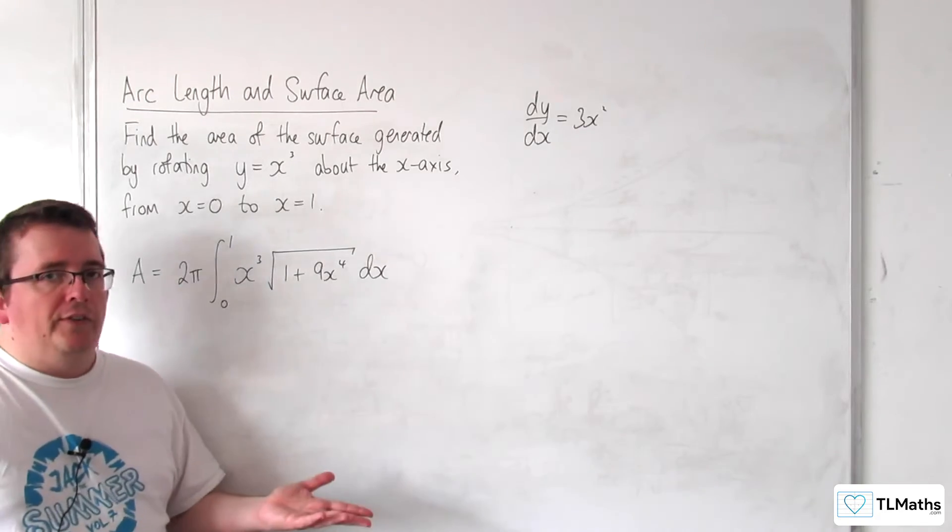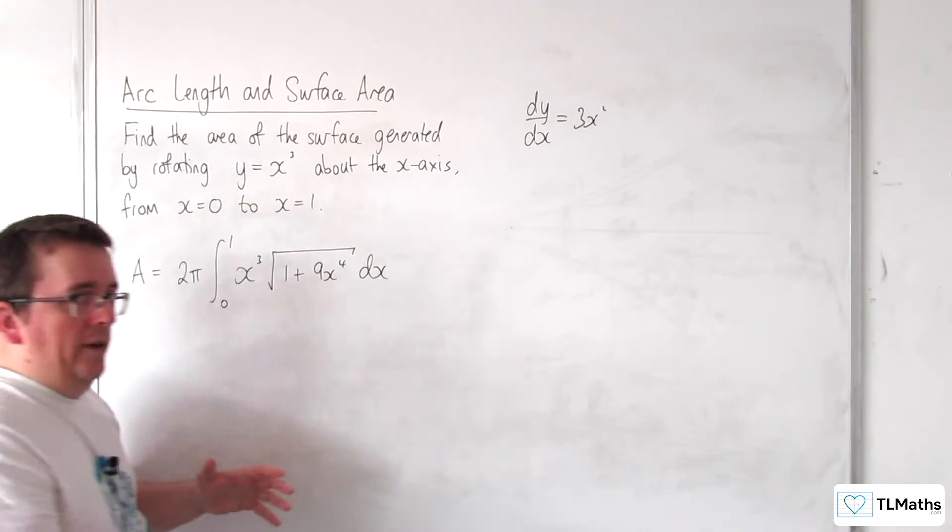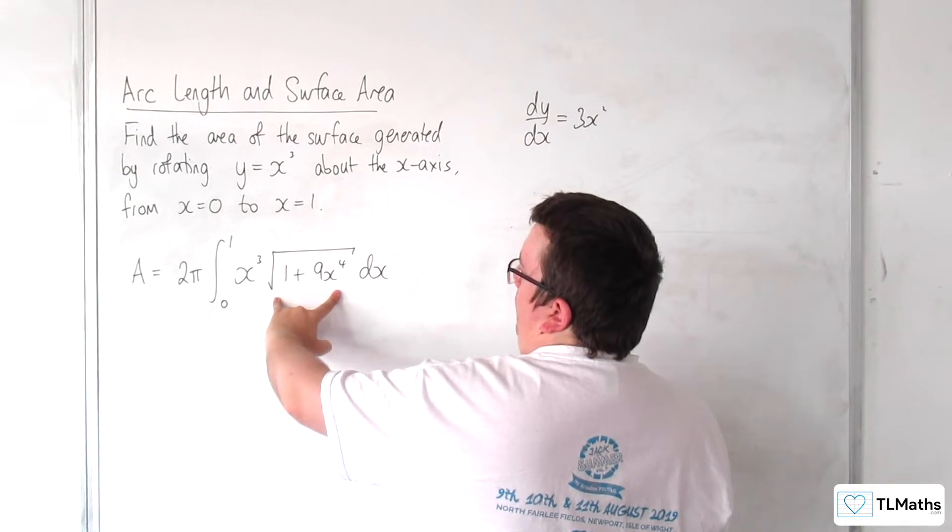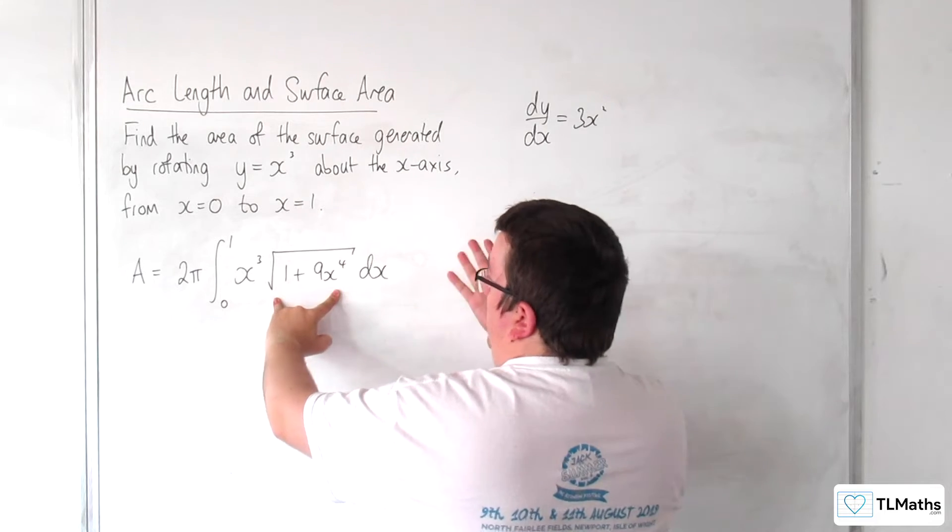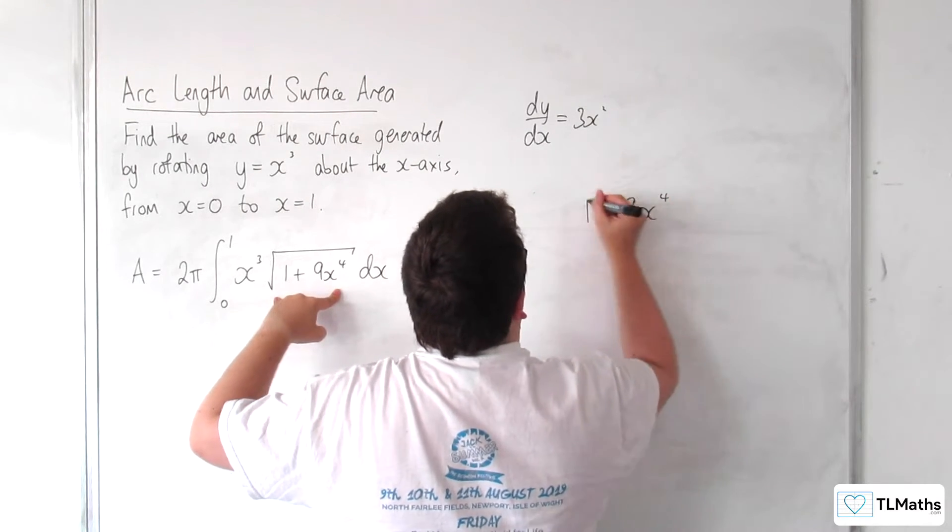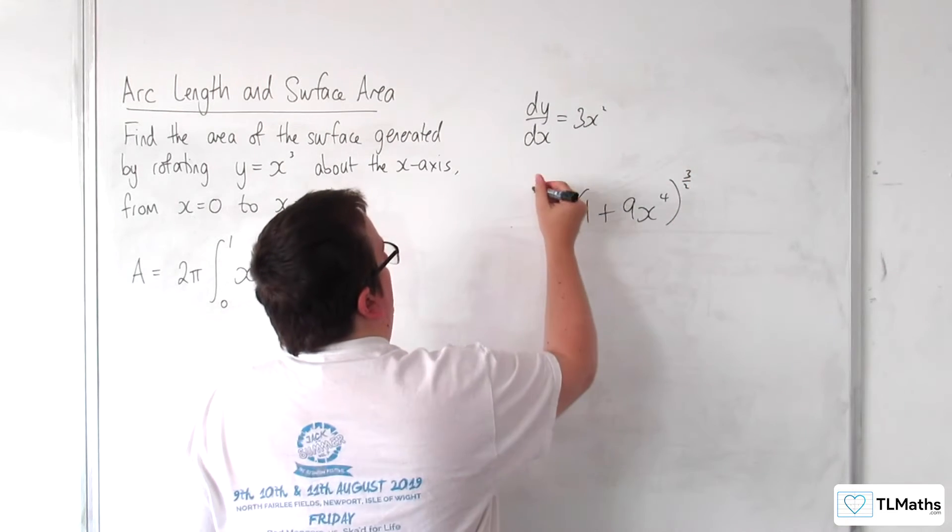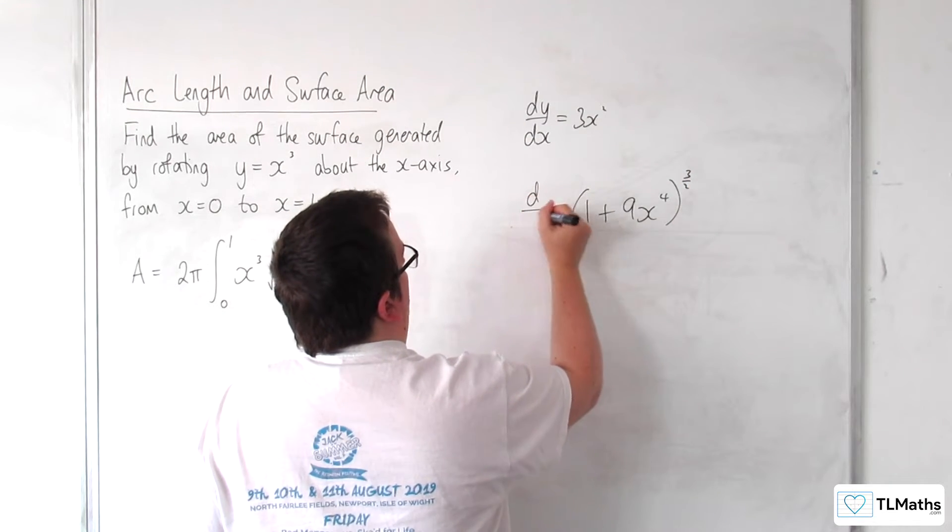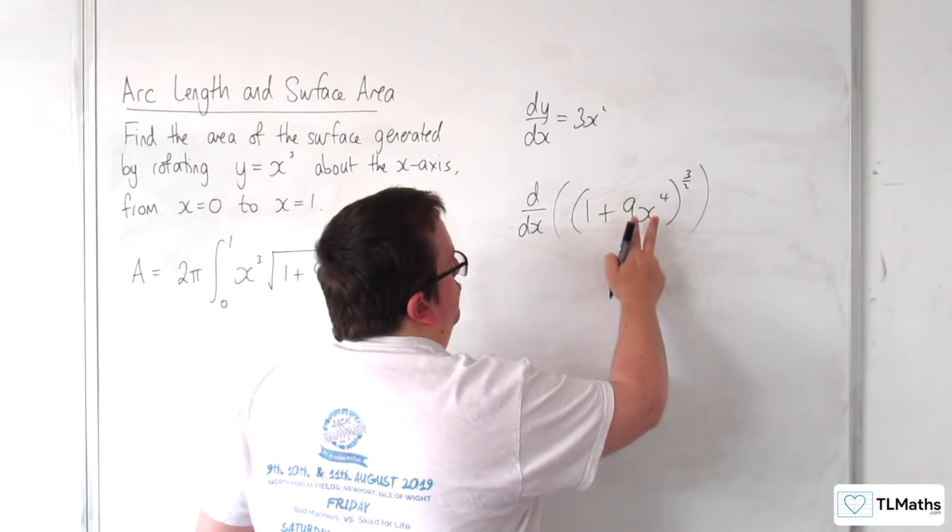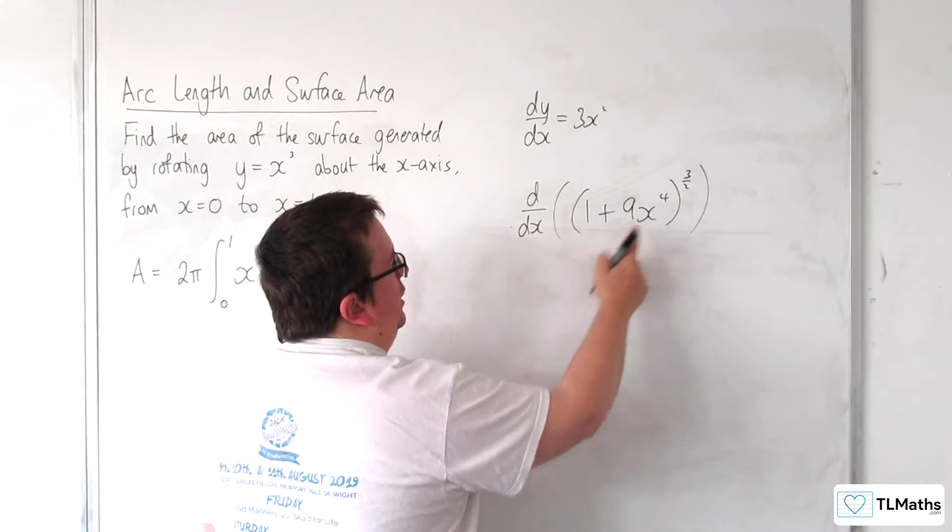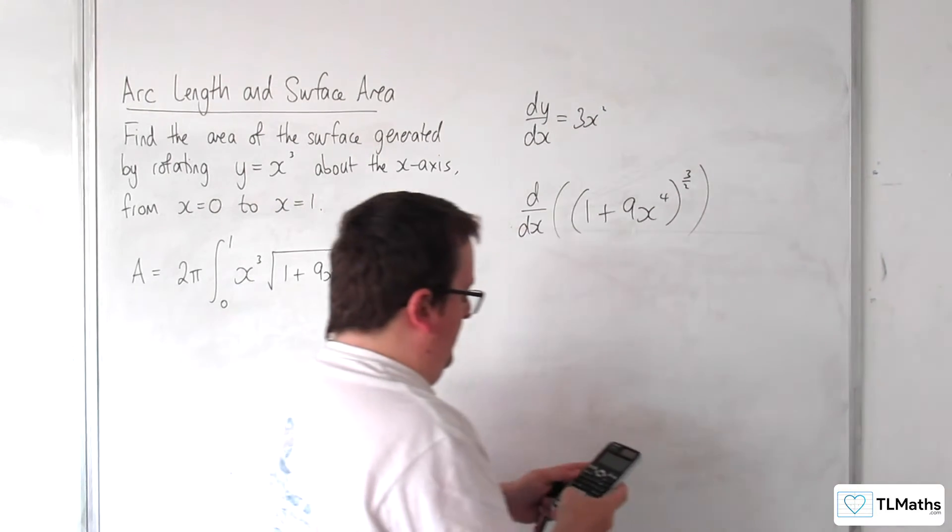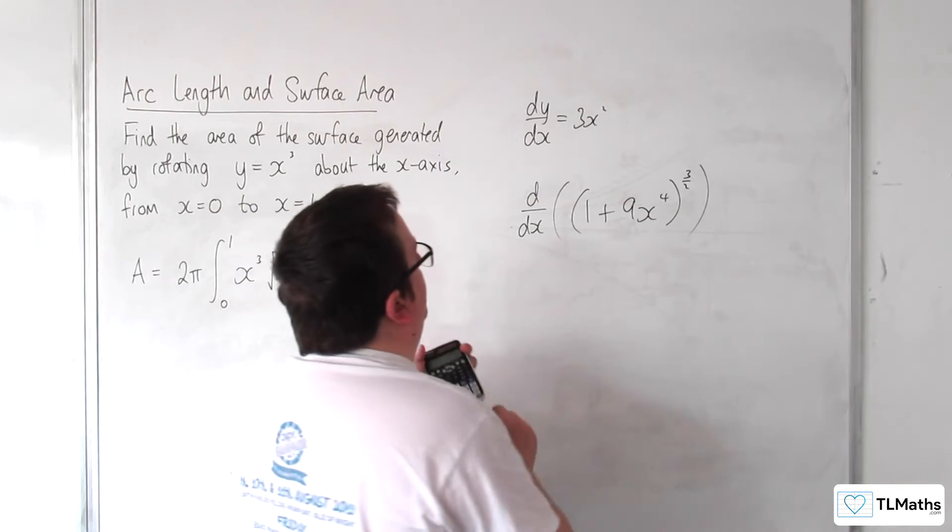Let's just use reversing the chain rule. So the way I always think about this is this is 1 plus 9x to the 4, all to the power of a half. So if I added 1 to the power, I would have that. And if I differentiate this with respect to x, I'm going to get the derivative of 9x to the 4, which is 36x cubed, multiplying with the 3 halves. So 36 times by 3 halves is 54.